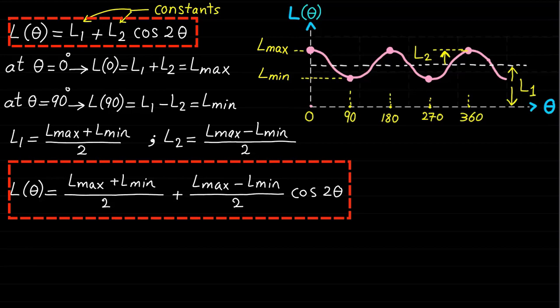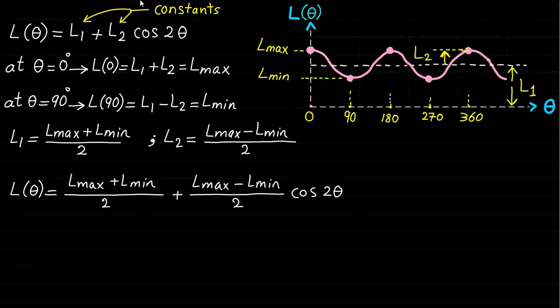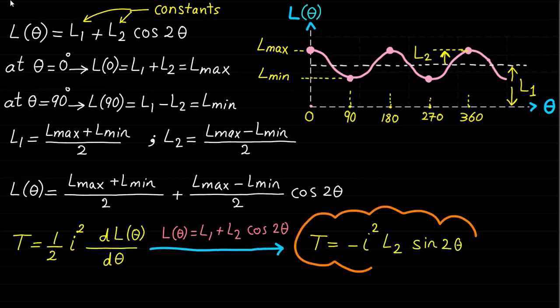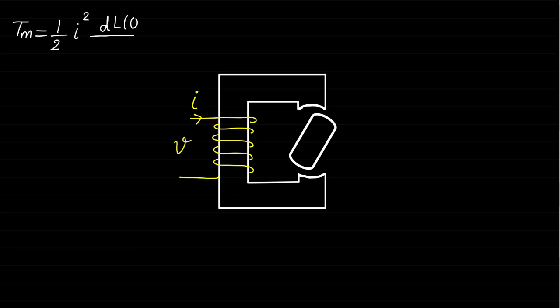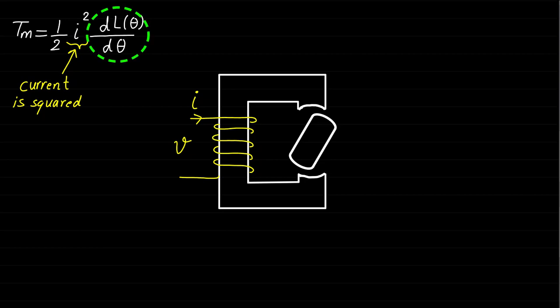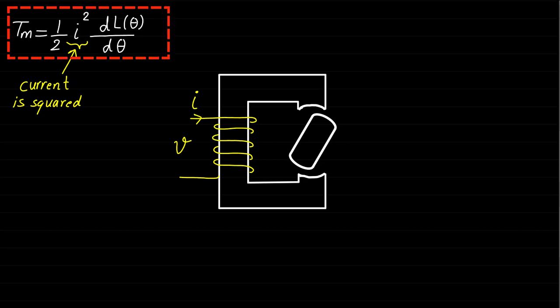Now, since we have identified the self-inductance L(θ), the developed torque can be calculated accordingly. The question is: how do we identify the direction of the developed torque when the system is excited? Since the current is squared in the torque expression, the torque direction is independent of the current direction — whether the current is positive or negative. Therefore, the torque direction depends on the rate of change of inductance dL(θ)/dθ only. The torque acts in the direction where the inductance increases with respect to rotor angle theta.